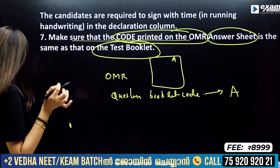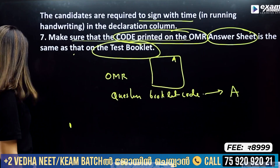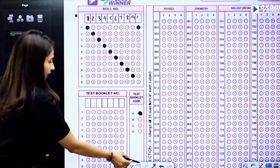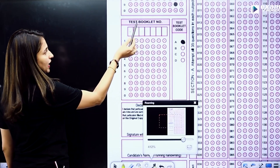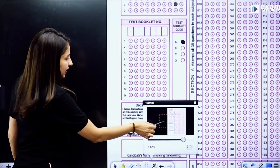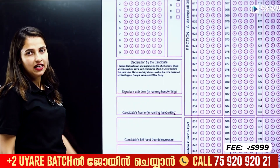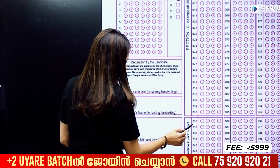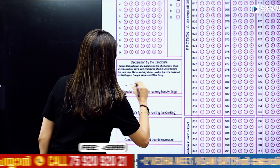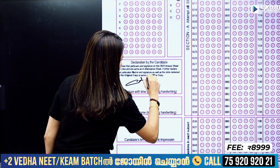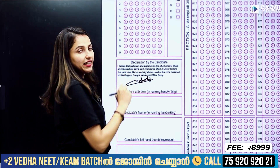We are required to sign with time. You need to mark the OMR sheet correctly. You need to write your name, your roll number, and the test booklet code. You have a signature area — Declaration by the Candidate. Sign your name in running handwriting, and include the date and time.